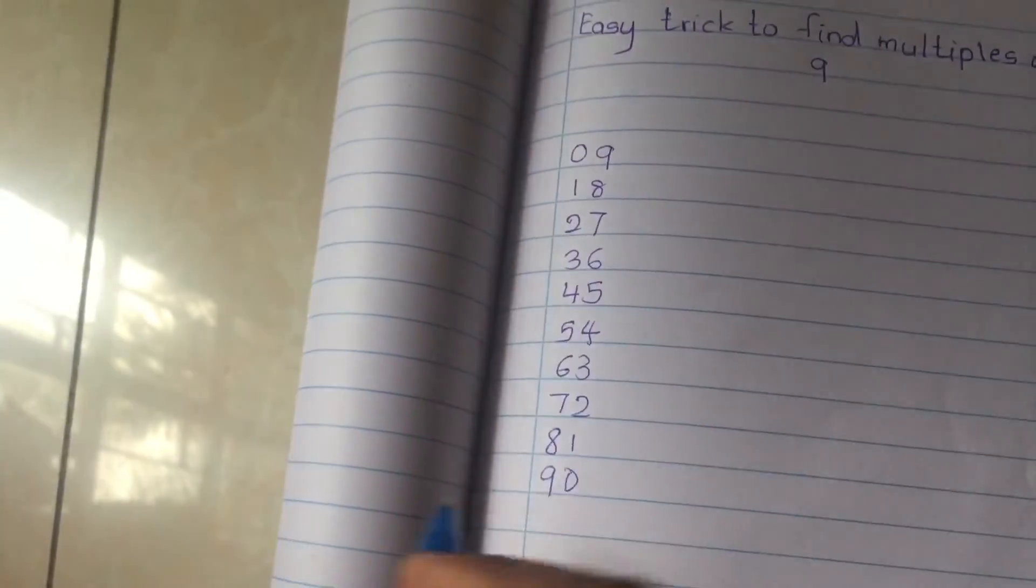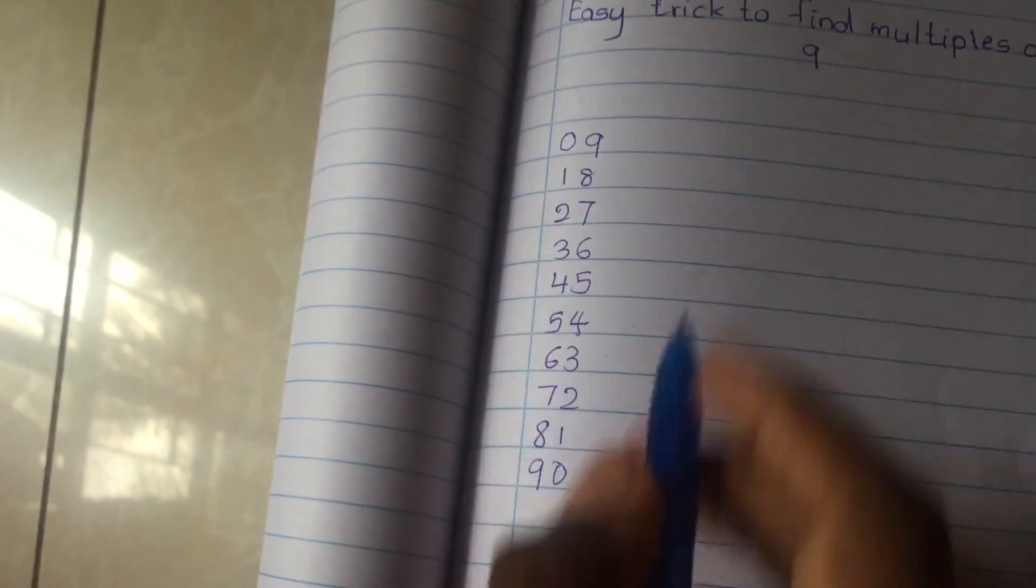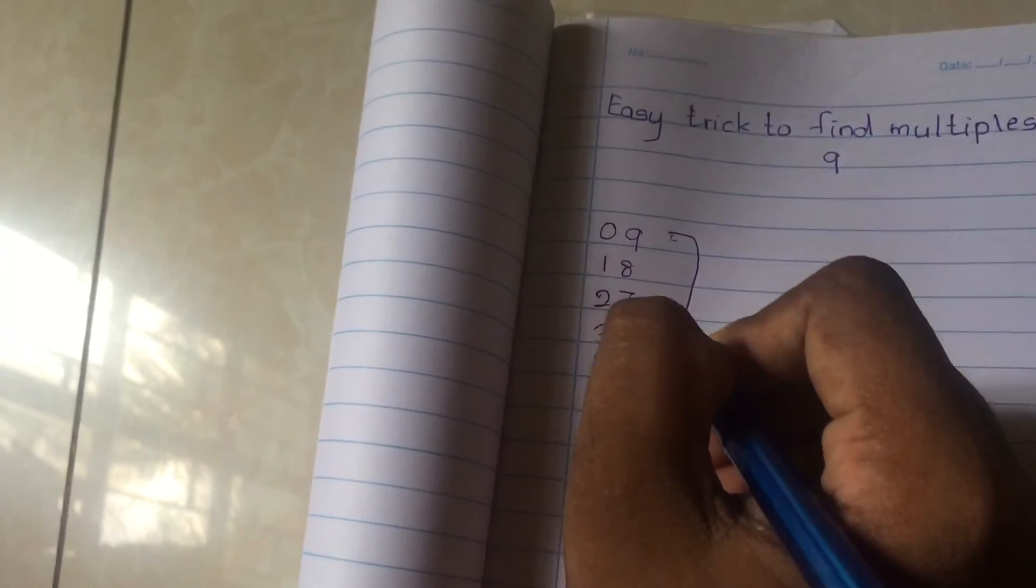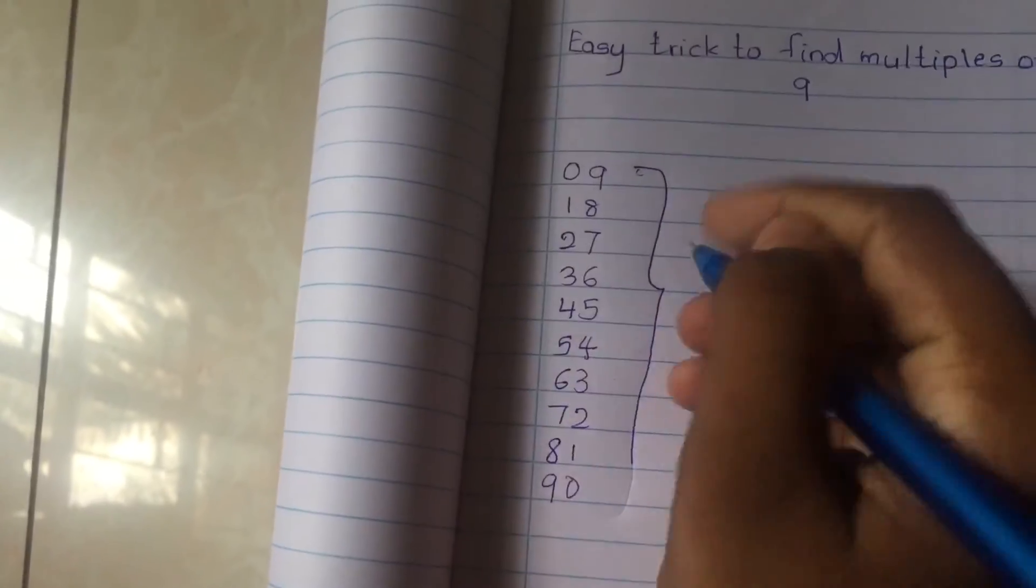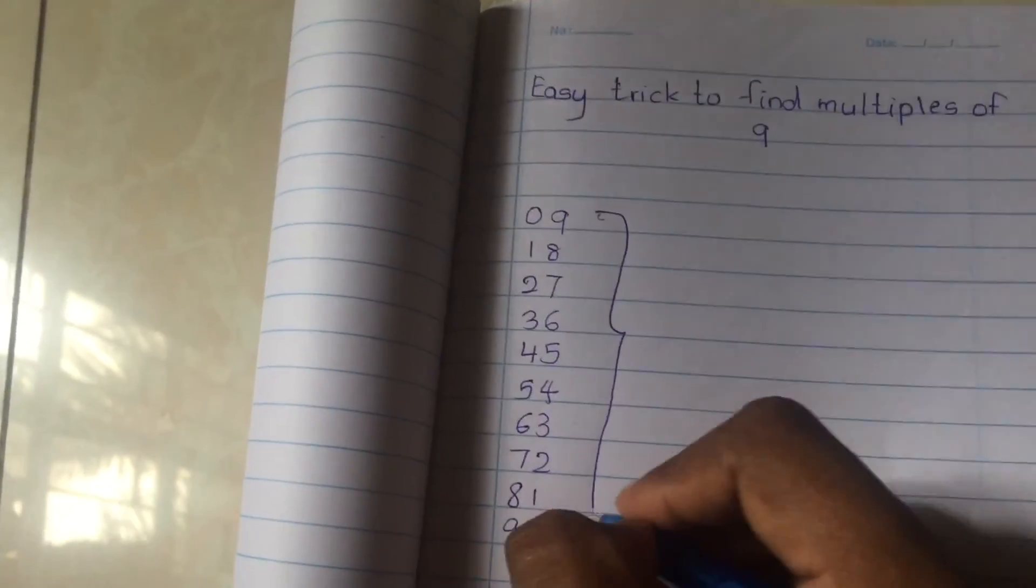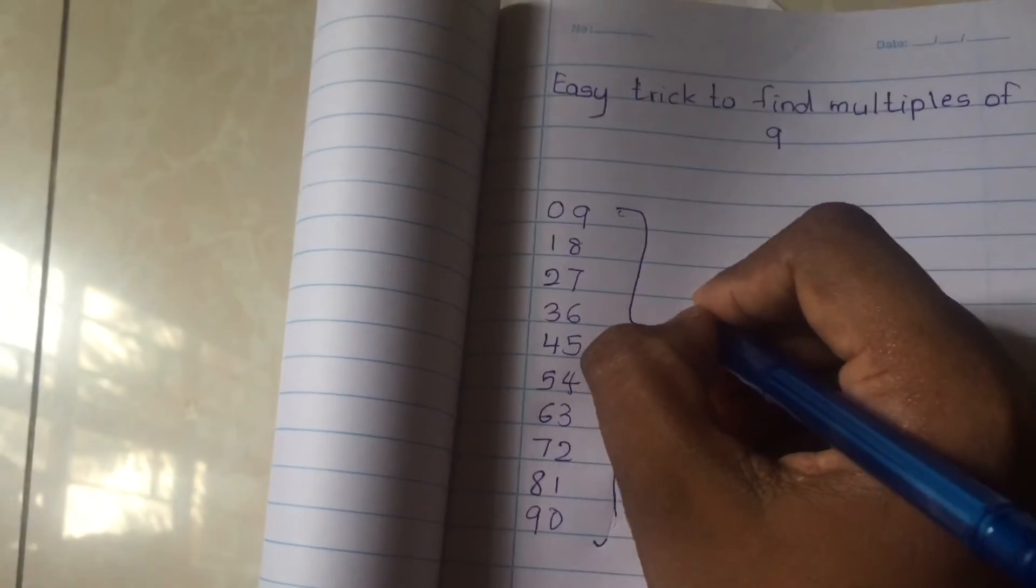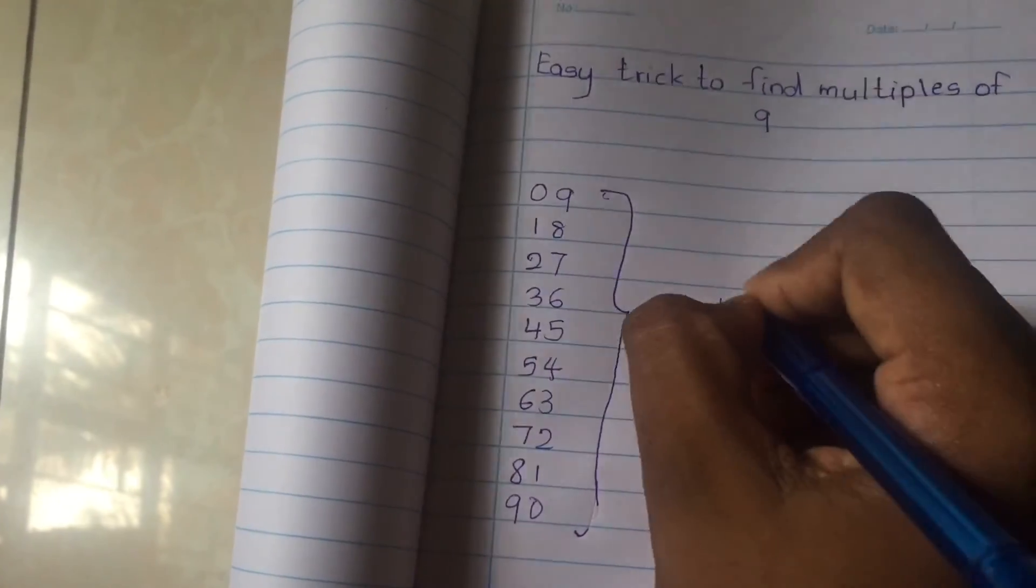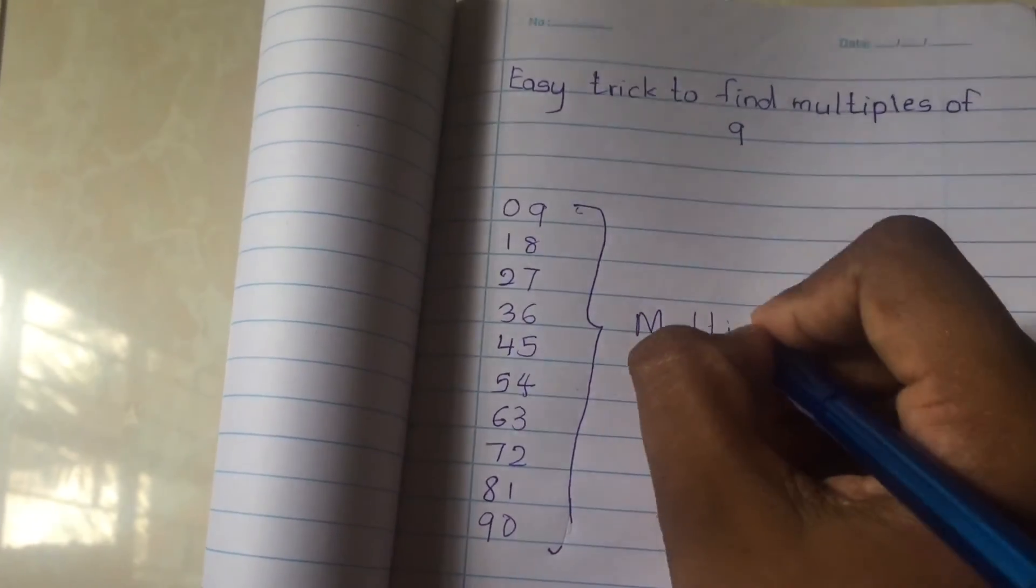Now we can see the multiples of 9: 9, 18, 27, 36, 45, 54, 63, 72, 81, 90.